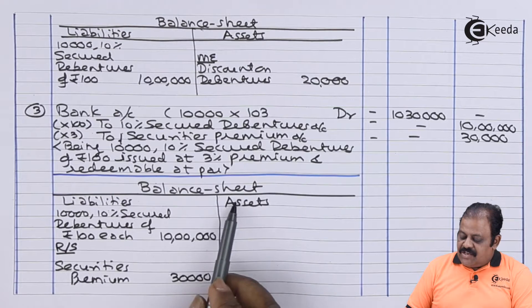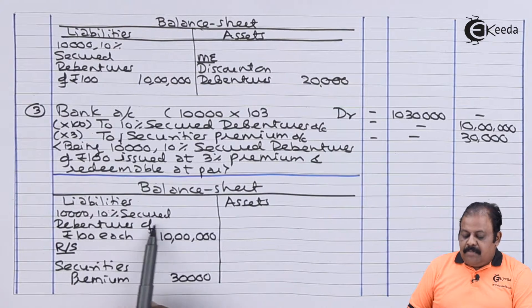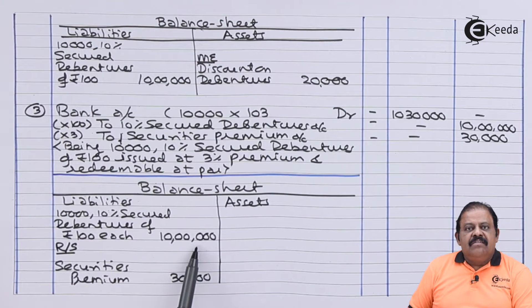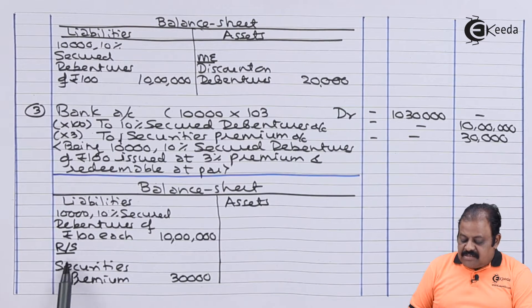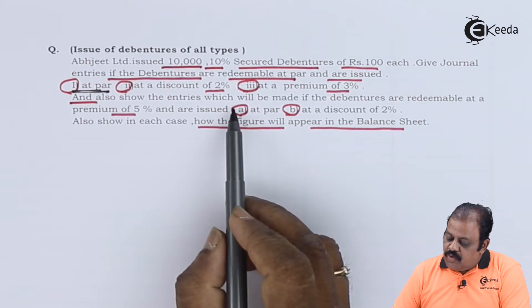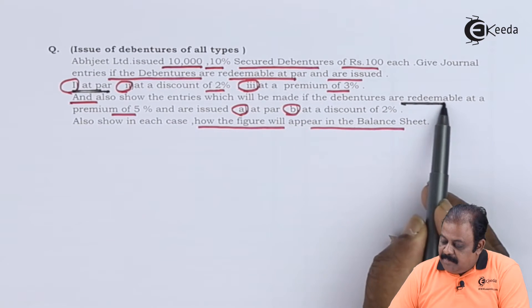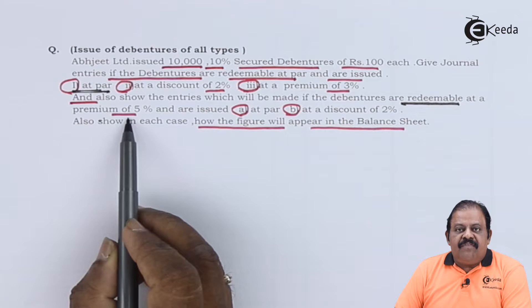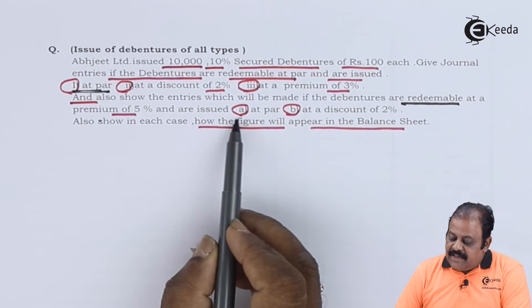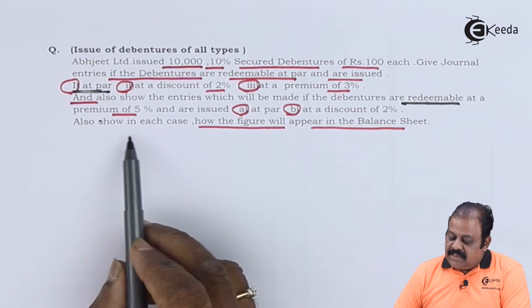While disclosing in the balance sheet, we will have 10,000 10% secured debentures of Rs. 100 each — Rs. 10 lakhs — under the heading long-term borrowings. Under the heading reserves and surplus, we will have securities premium Rs. 30,000. Also show the entries which will be made if the debentures are redeemable at a premium of 5% and issued at par with a discount of 2%.